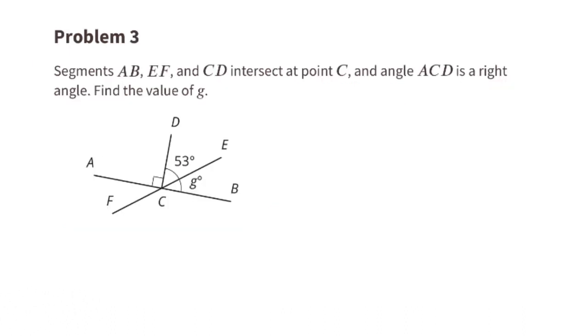Problem number 3. Segments AB, EF, and CD intersect at point C, and angle ACD is a right angle. Find the value of G. Look at the figure. Angle ACD is a right angle, so we know that's 90 degrees, because right angles are 90 degrees.